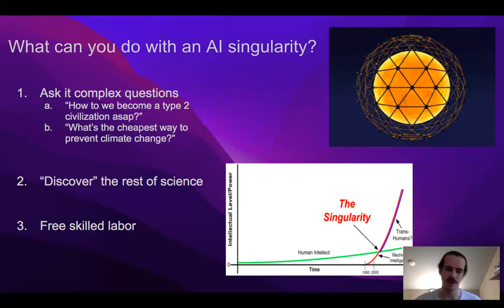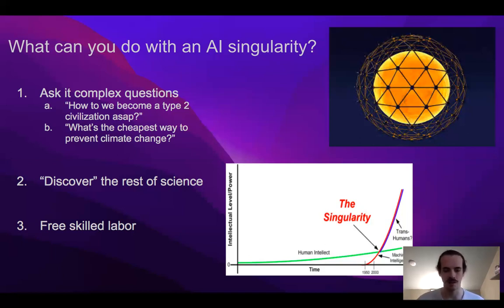Second, we could discover the rest of science — simulating all possible ideas, with a system smart enough to discover things humans couldn't. Third, free skilled labor: this intelligently smart system could basically be used for anything — a free engineer for any skilled labor task — and the only real cost would be the computing power, so essentially it would be free.